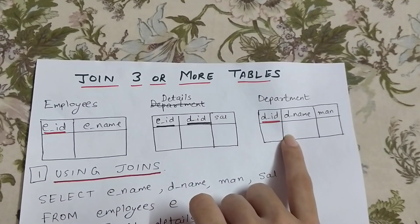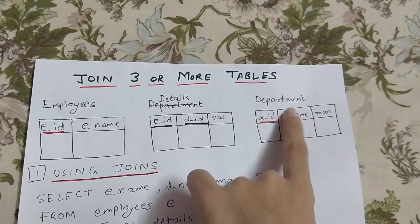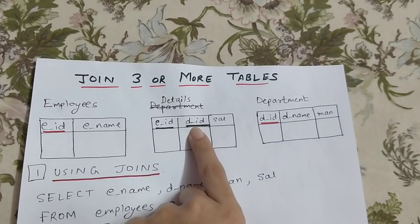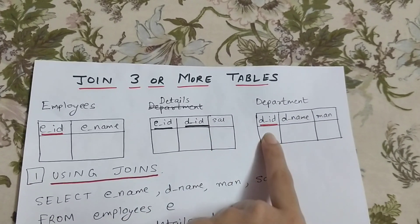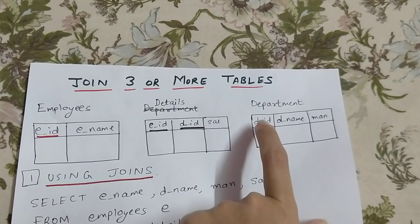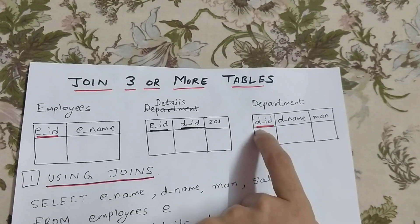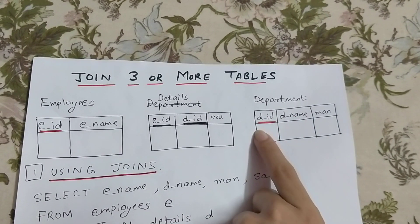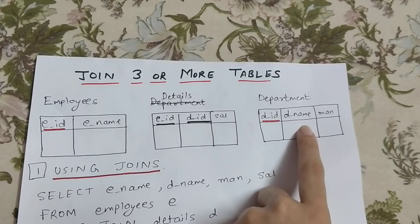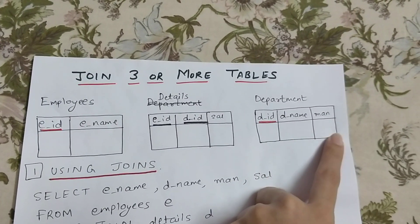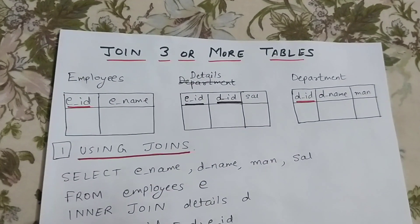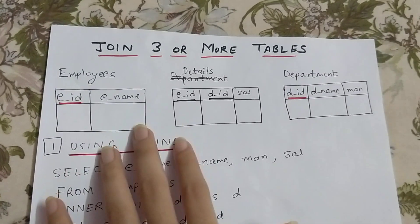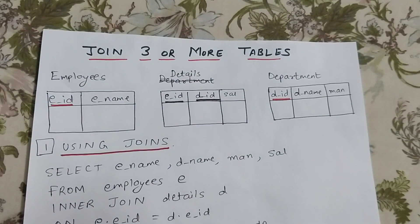Then there is the department table which gives details for the department. Since DID was a foreign key in the details table, DID is the primary key in the department table. It contains DID, D_name, and manager — basically department ID, department name, and manager of the department.